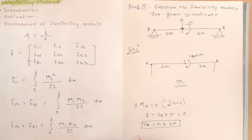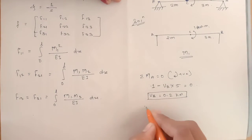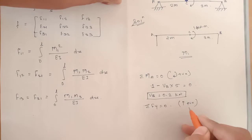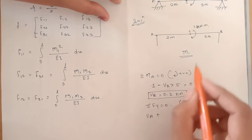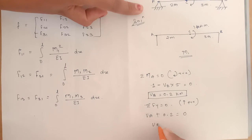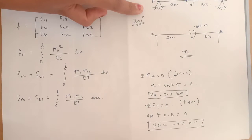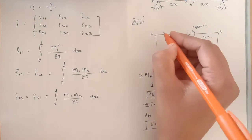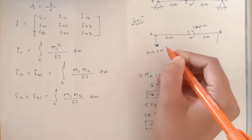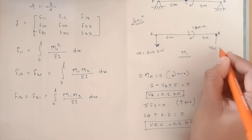Taking summation of vertical forces equal to zero, upward positive: VA plus VB equals zero, so VA plus 0.2 equals 0, giving VA = −0.2 kN. Since VA is negative, it acts downward (0.2 kN downward at A), and VB is positive, so it acts upward (0.2 kN upward at B).